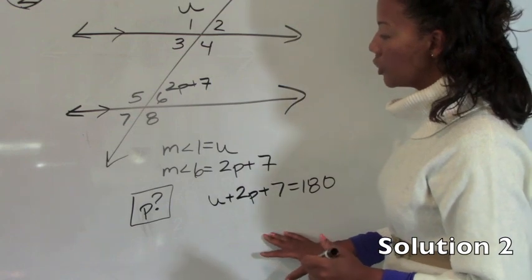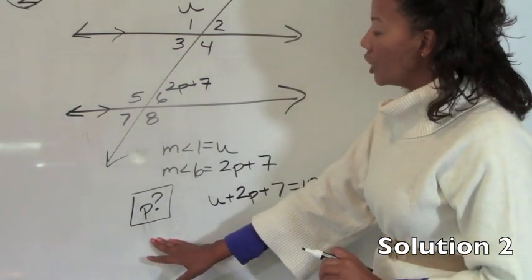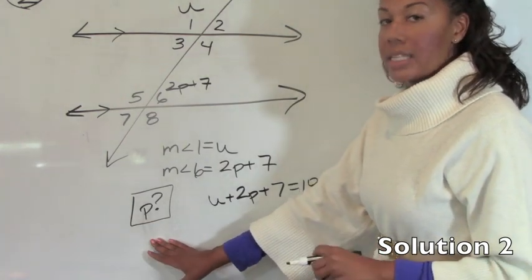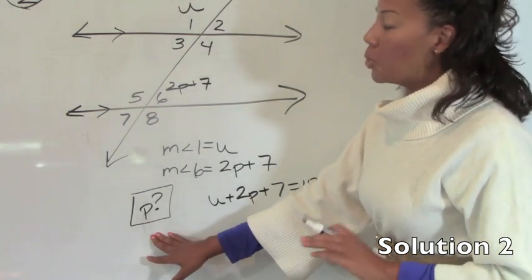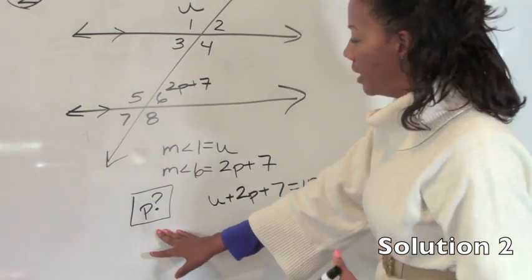Now go back and make sure you understand what you're being asked. They simply want to know what p is but they said in terms of u. And that simply means solve for p and you will have u in the answer. So p depends on what u is in every instance.